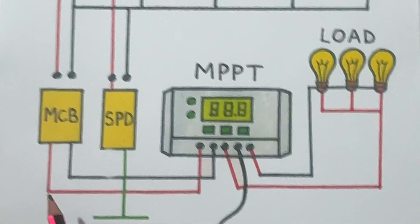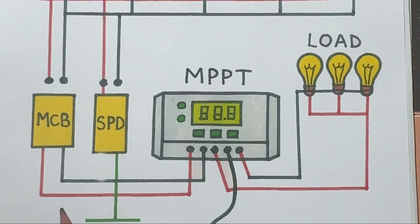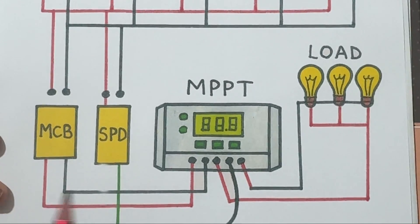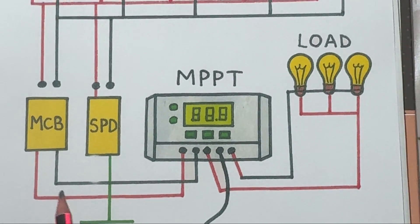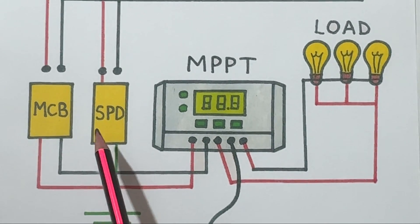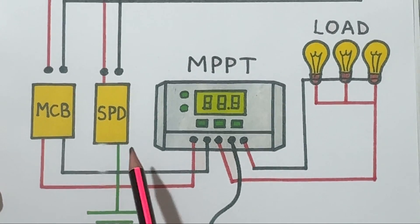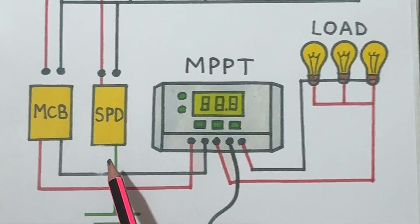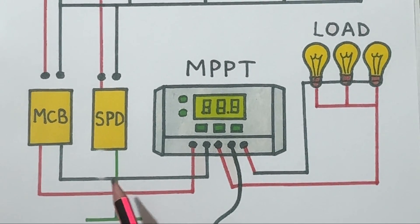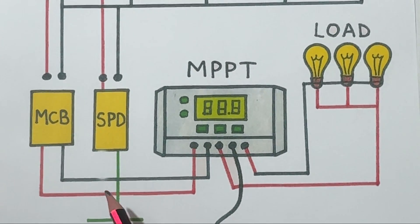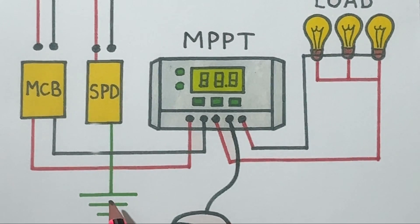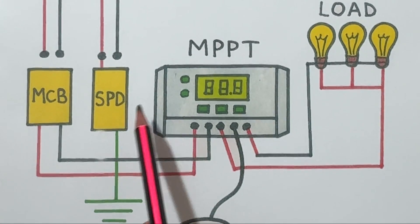After that, the current passes through the SPD, which stands for surge protection device. This is another layer of safety. It protects the system from sudden voltage spikes like lightning strikes or grid surges. It's also grounded - you can see the green wire going into the earth, so any excess current is safely sent into the ground.